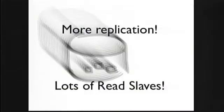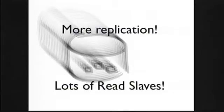More replication. Lots of read slaves. Because we meant to rewrite that accessor class again, since we didn't like it the first time. Plus, you really meant to get into Memcached really deeply anyway.